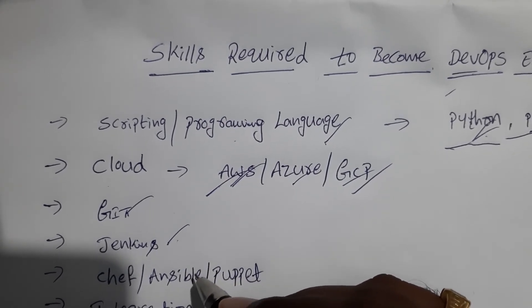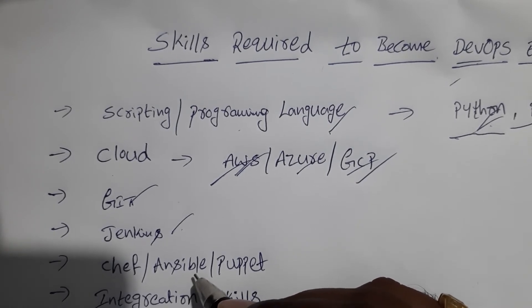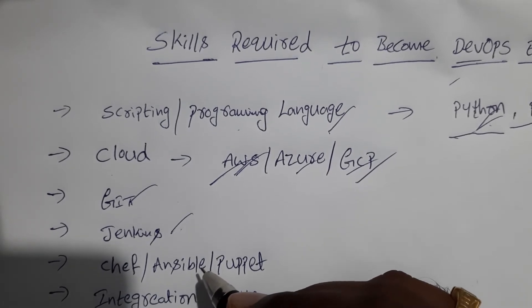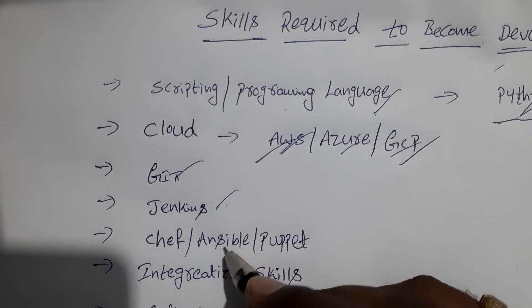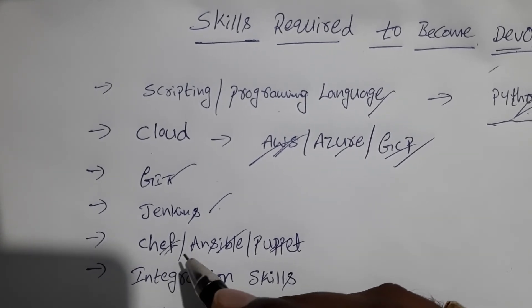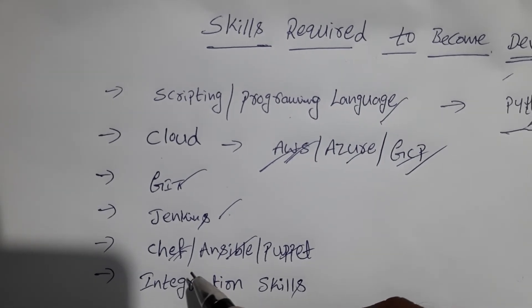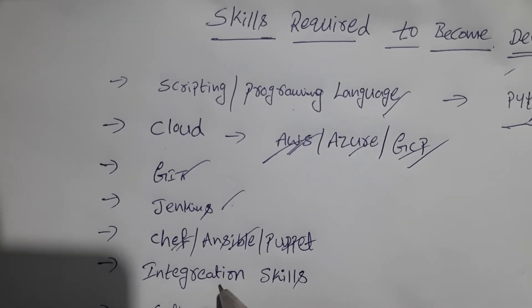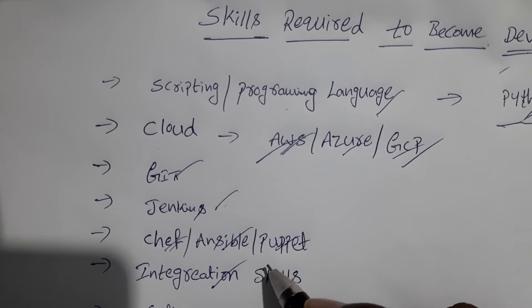The next one is Jenkins. Jenkins is used to build and test applications. Next are Chef, Ansible, and Puppet — these are used for configuration management. You can use either Chef, Ansible, or Puppet. Chef is the most frequently used one in the IT industry for configuration management, so you should have strong experience in at least one of them.